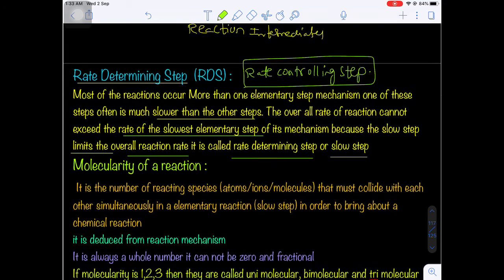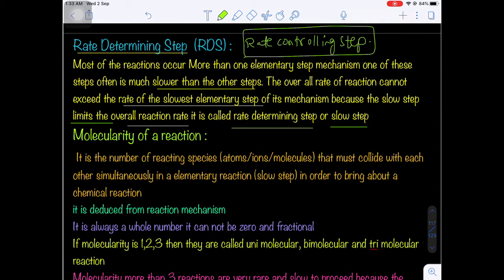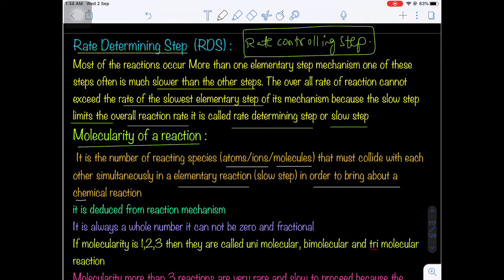The next important topic, especially for competitive examinations and board exams, is molecularity of a reaction. Molecularity is the number of reacting species — which may be atoms, molecules, or ions — that must collide simultaneously with each other in an elementary reaction to bring about a chemical reaction. In a chemical reaction, the reacting molecules collide with each other; during this collision, old bonds break and new bonds form.